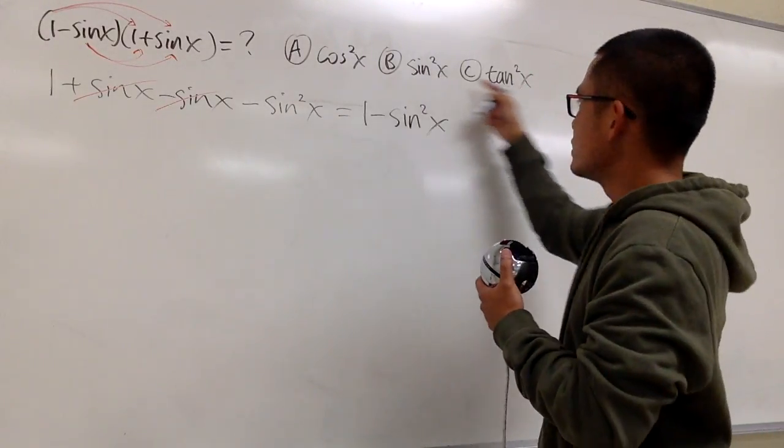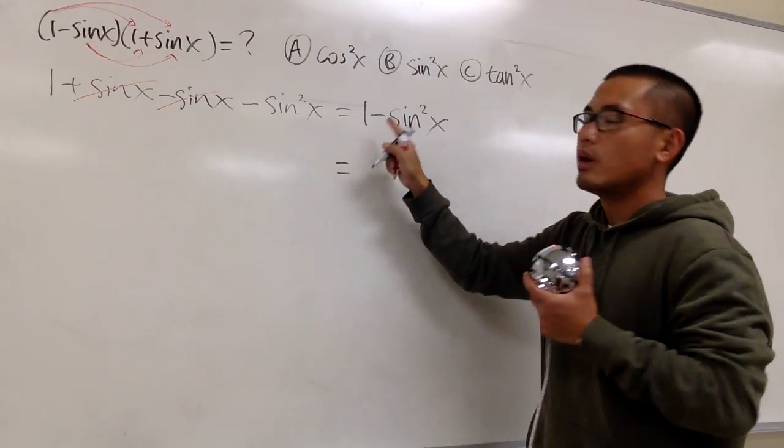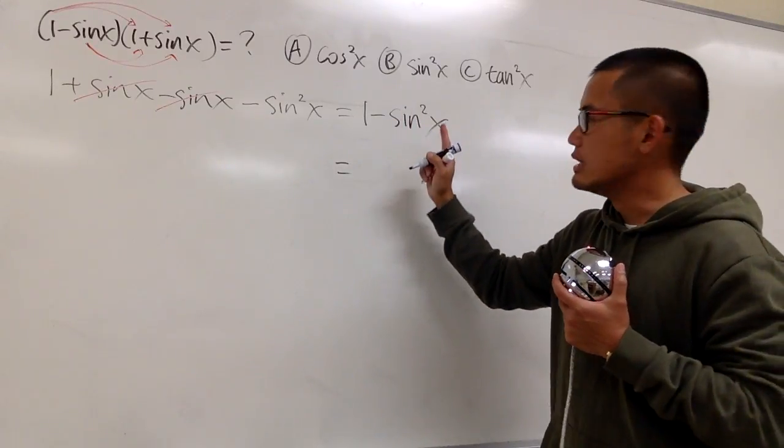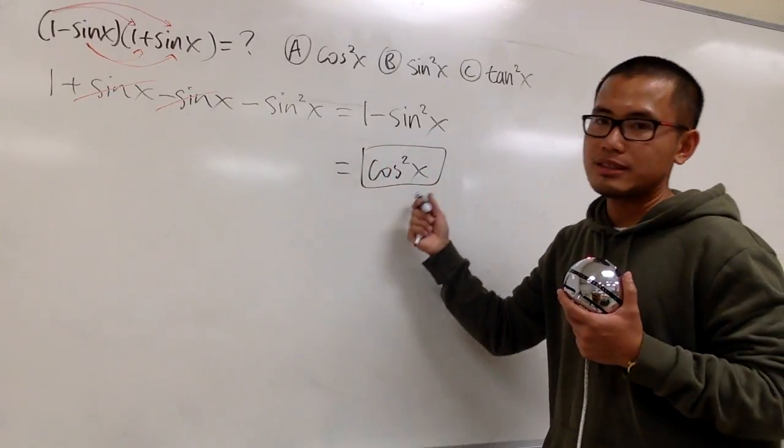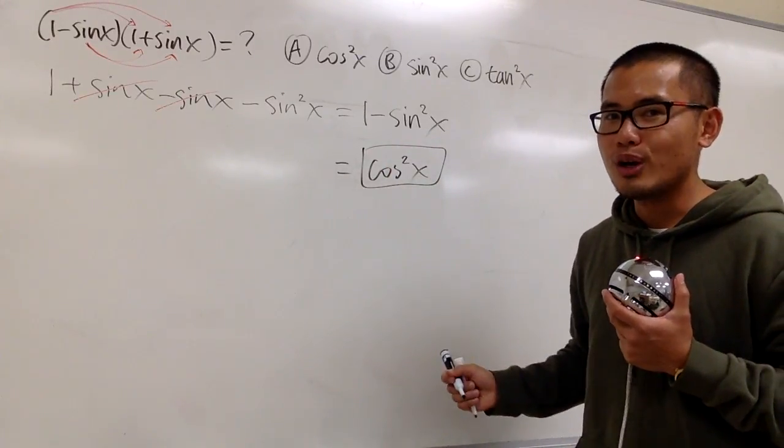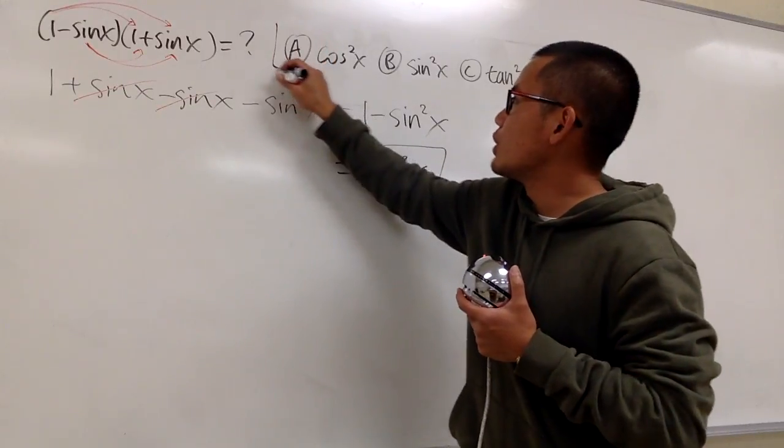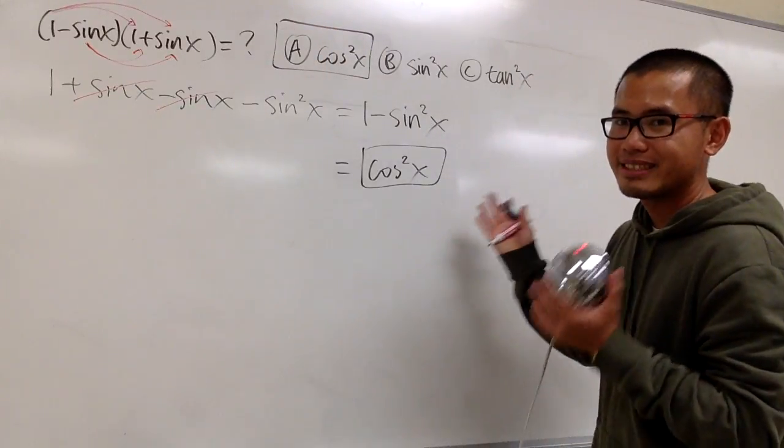And this is not one of the answer choices, but we know 1 minus sin squared x is the same as cos squared x. This is the identity that we have to remember really, really well. And this is answer choice A, and that's it.